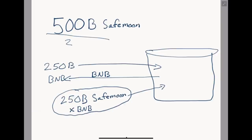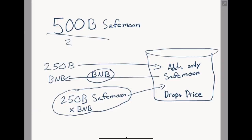Once we have half the funds in SafeMoon and the other half in BNB, we call the add liquidity function on the two halves. This adds an equal ratio of SafeMoon and BNB to the liquidity pool so the price does not decrease. However, this BNB being put back into the pool was just sold and taken out from the same pool, so the result of this function being called does slightly lower the price of SafeMoon in the short term — by around 1.5% depending on the ratio of BNB in the pool to the total market cap. Just know this daily drop in price can never be greater than 5%.